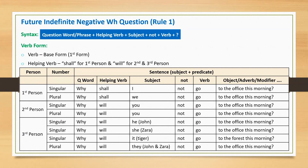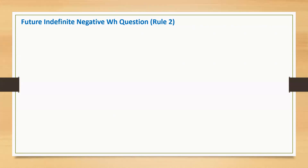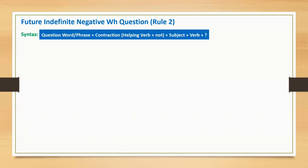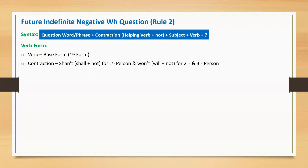In the next slide, I will explain another way of making future indefinite negative WH questions. As per rule 2, the sentence starts with a question word or phrase, followed by a contraction, then subject, main verb (base form), and a question mark. Contraction 'shan't' is applicable for first person, and 'won't' is applicable for second and third person.